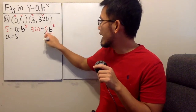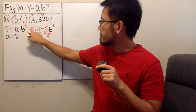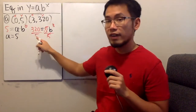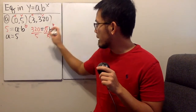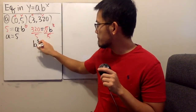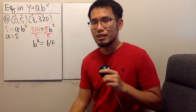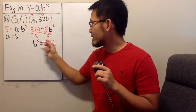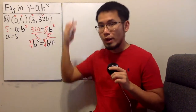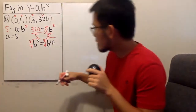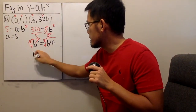We divide both sides by 5 and they cancel. 320 divided by 5, we get 64. So b to the 3rd power equals 64. To solve for this, you can take the cube root on both sides, or raise both sides to the 1 over 3 power. Those cancel, and you end up with b equals 4.